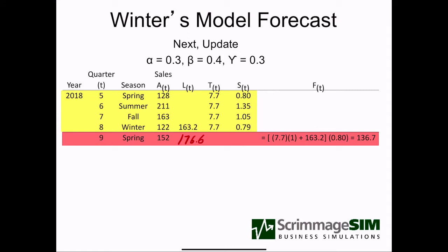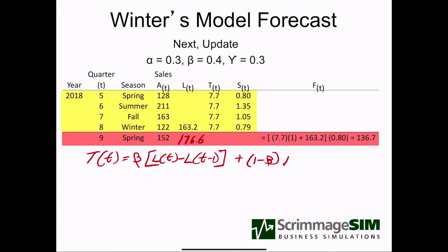Next, the formula for updating the trend is: T(t) = beta times the level in period t minus the level in period t minus 1 — that represents our observed trend comparing the two levels — plus one minus beta times the trend in period t minus 1. Beta in this problem is 0.4, which is pretty aggressive; a typical value is more like 0.2, but we used different numbers so that it was easy for students to follow.